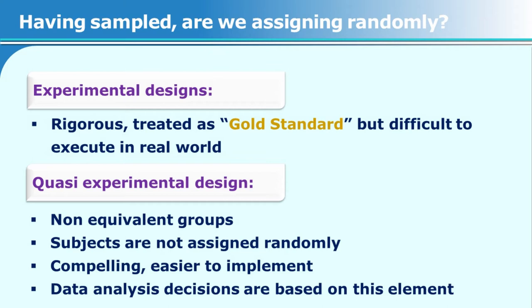Quasi-experimental designs are not as stringent as true experimental designs, but they offer more flexibility. They allow different sampling methods — including snowball sampling — and can include time series designs where subjects are measured repeatedly to track changes. These designs can work with varying numbers of subjects. Importantly, when choosing your data analysis, you must check whether all constraints for parametric analysis are met; if not, you must choose non-parametric data analysis. We will now look at the differences between these two approaches.